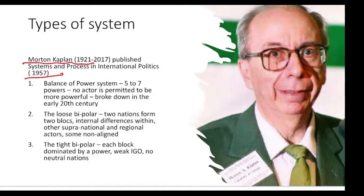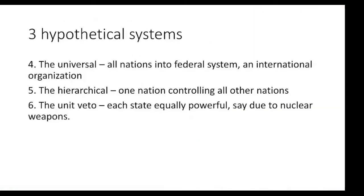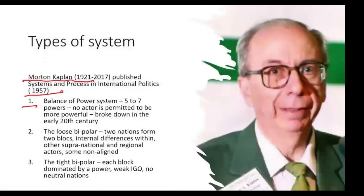Three are actual, historical systems: the balance of power system, bipolar — both loose bipolar and tight bipolar. And then he proposed three more systems which are hypothetical. So, what are these six systems?